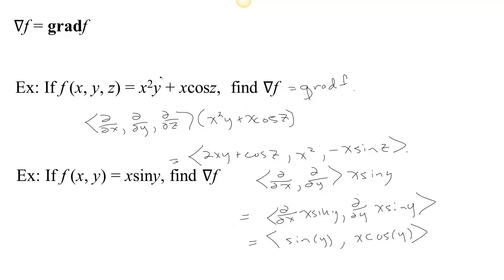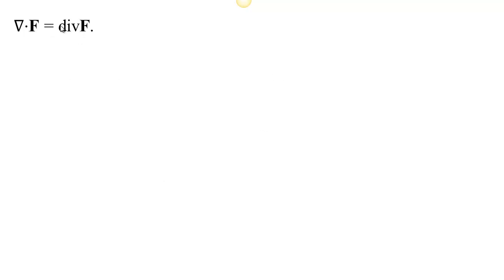So the idea is with this del notation: we apply the del operator to the function, and that produces what we've been calling the gradient. If you see ∇f where f is a scalar-valued function, you know we're talking about the gradient. We could also use this del notation to talk about the divergence.